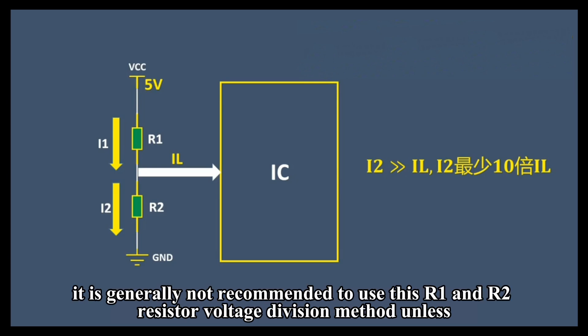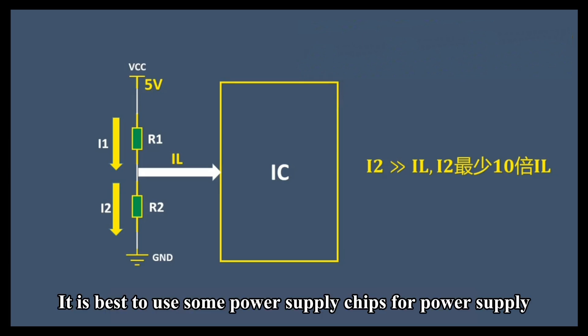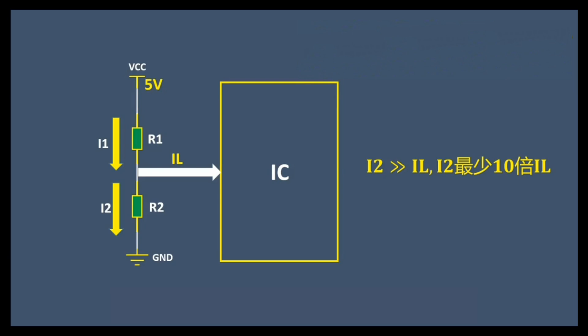For some power supply locations, it is generally not recommended to use the R1 and R2 resistor voltage division method unless the current here is particularly small. It is best to use some power supply chips for power supply.